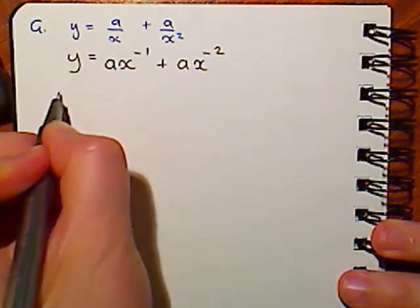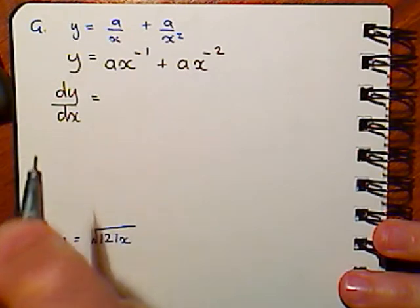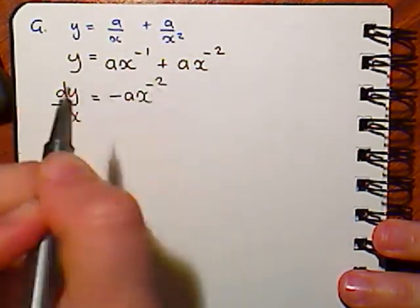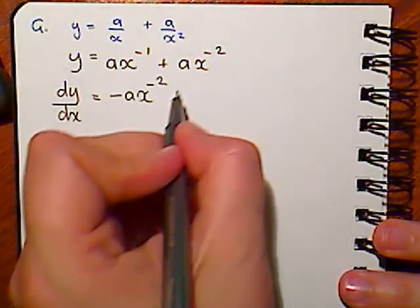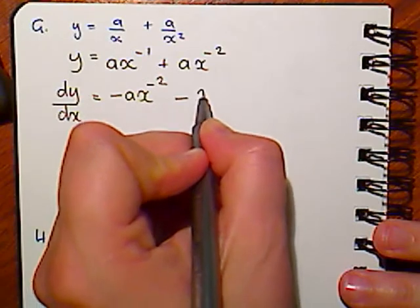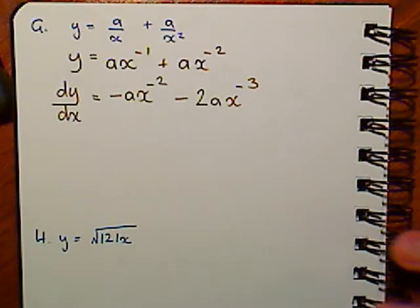Now I can find my derivative using my power rule. I get minus ax to the minus 2, taking 1 off the power. Minus 2 at the front of this will give me minus 2ax to the minus 3. Watch the negatives in that one.